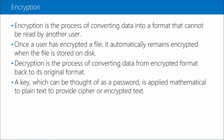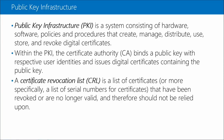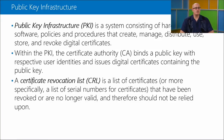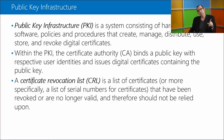Encryption is a process of converting data into a different format that cannot be read by another user. Once a file is encrypted, it automatically remains encrypted when stored on disk. Decryption converts data from encrypted format back to its original format. A key - similar to a password in nature - is applied mathematically to the text to provide a cipher or encrypted text. Public Key Infrastructure, or PKI, is a system consisting of hardware, software, policies, and procedures to create, manage, distribute, use, store, and revoke digital certificates.